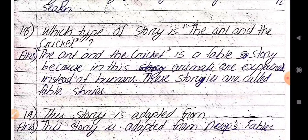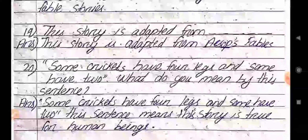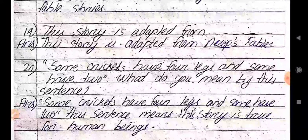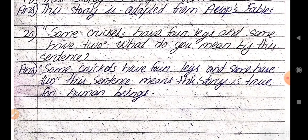The ant and the cricket — these two animals are used in place of humans. This story is adapted from Aesop's Fables. We had discussed this story in the summary, and it is taken from Aesop's Fables.